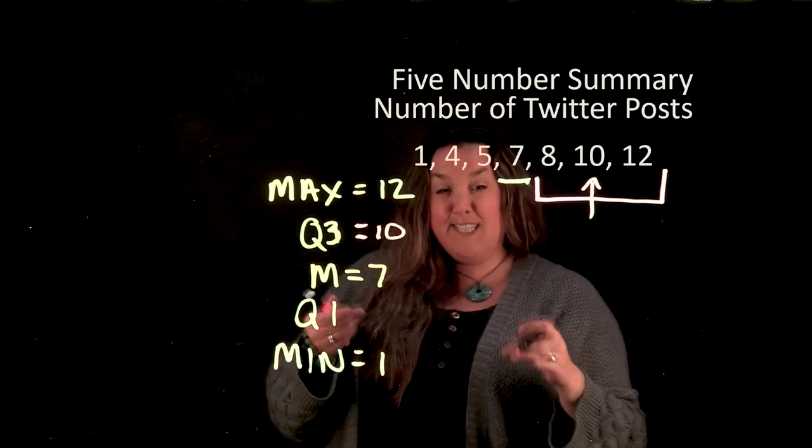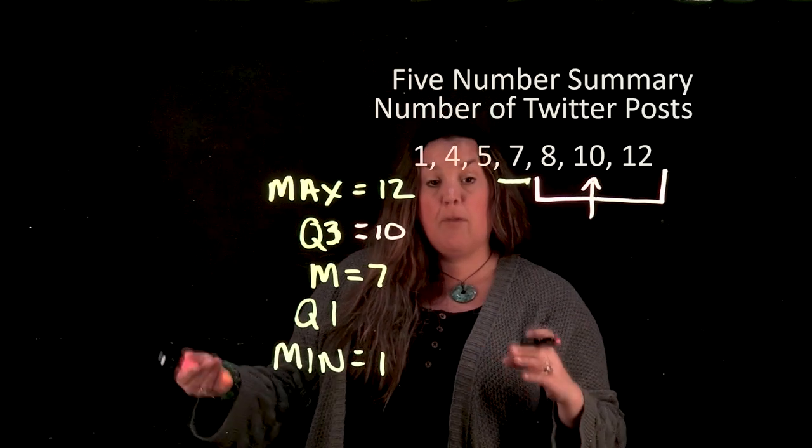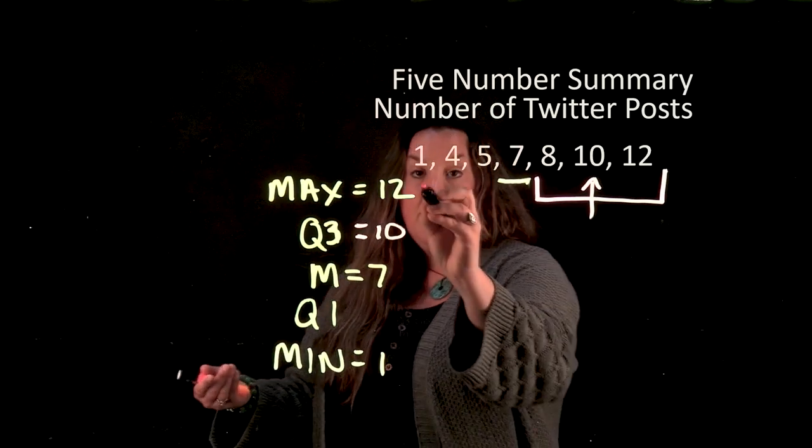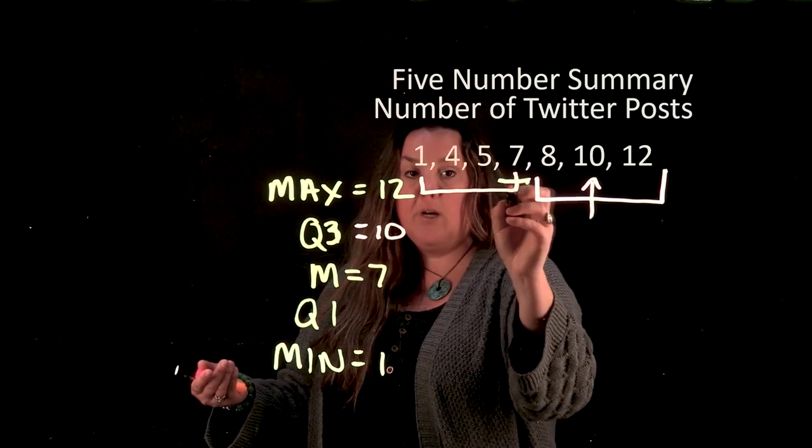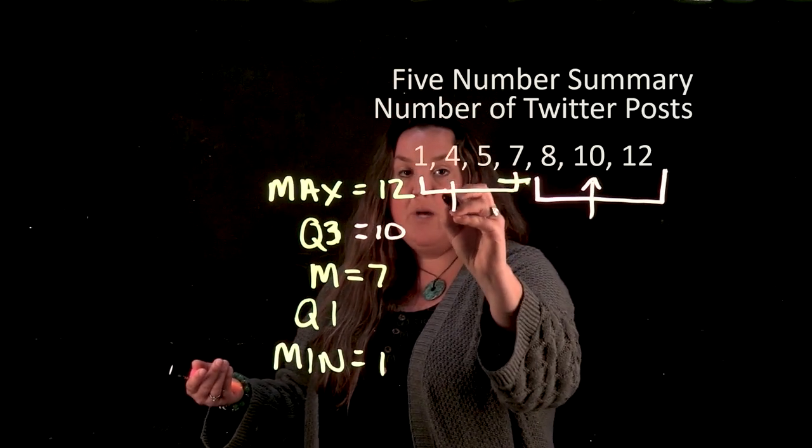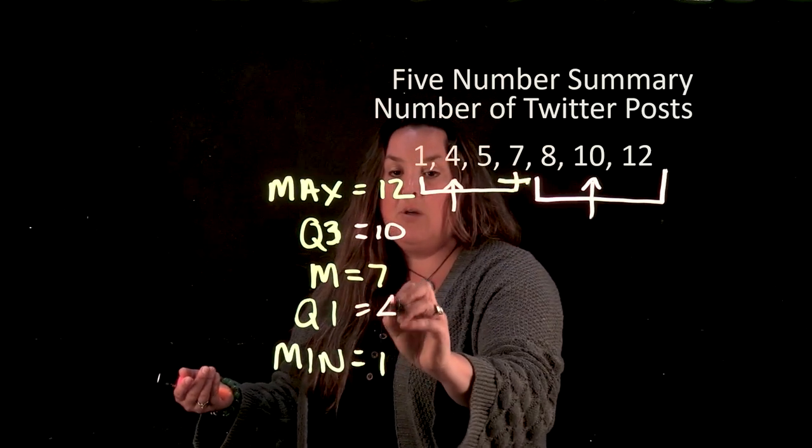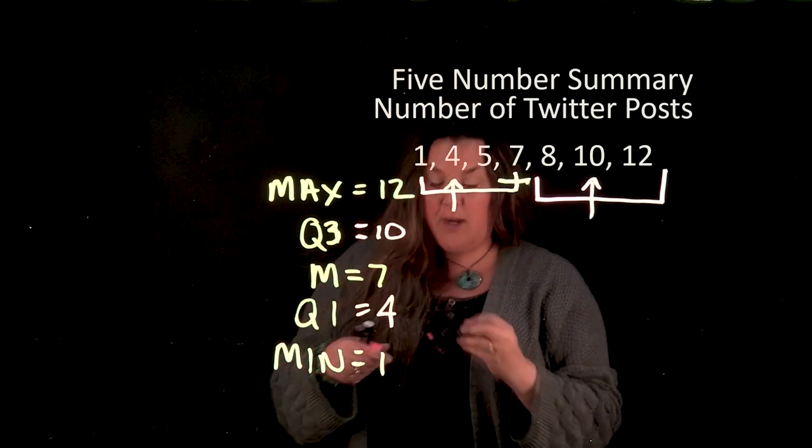And then we'll use the same logic for Q1 it's the median of the bottom half of the data. So here we have this is our bottom half because we cut it at seven and so our middle observation here would be four. So that's how you would find it by hand.